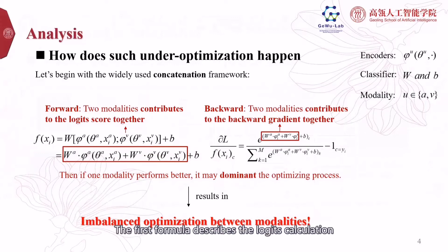The first formula describes the logit calculation in the forward process. The logit score is contributed by two distinctive parts in the way of addition. This means one better modality may dominate the prediction result.